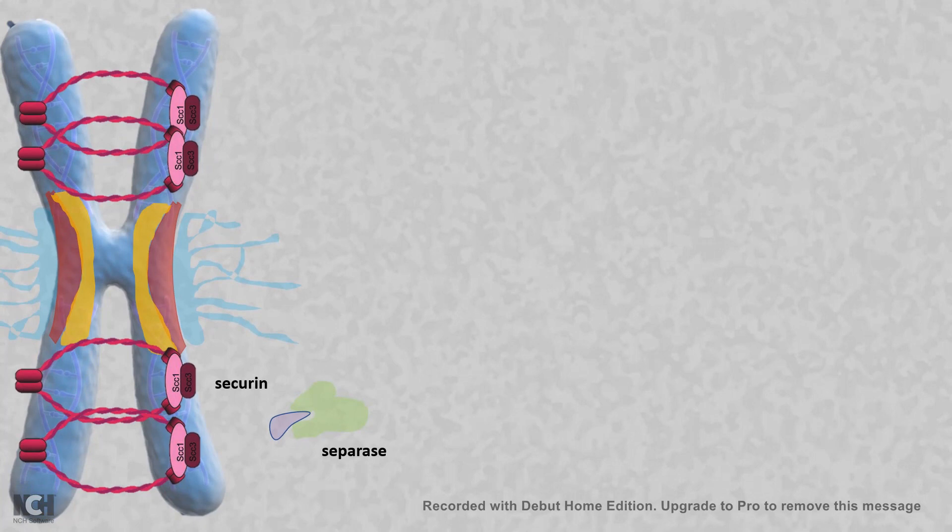Let us look at how these chromosomes are separated during anaphase or at the end of metaphase. There are enzymes known as separases which can break down the cohesin rings.